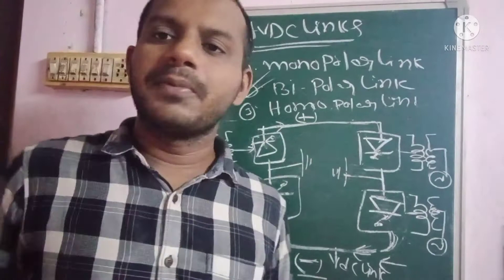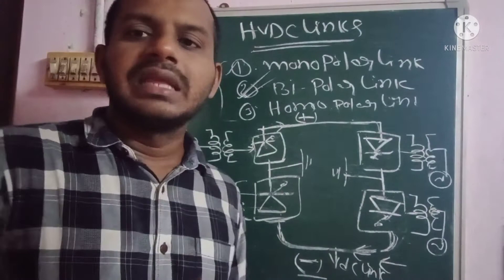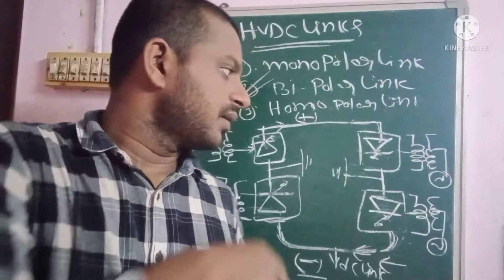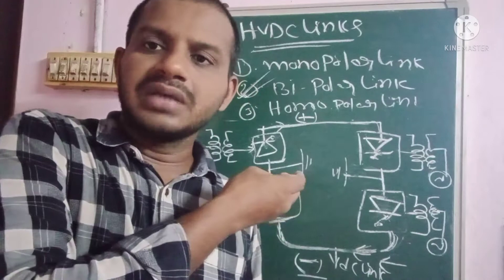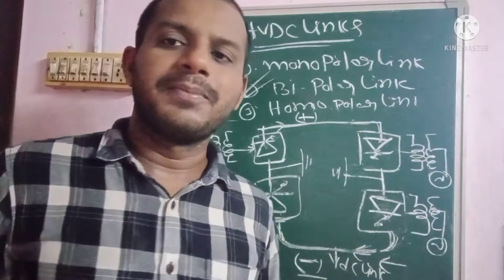The disadvantage of the bipolar link is that the maintenance cost is high compared to the monopolar link, because two conductor links are used. The cost of the converter station is also high. Additionally, losses including radio interference losses and corona losses are high when compared to the monopolar link.